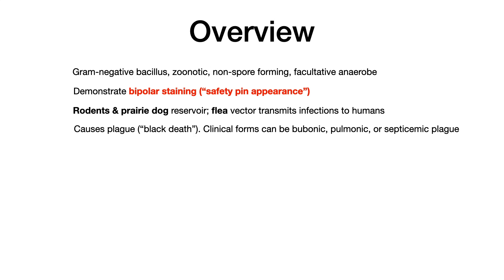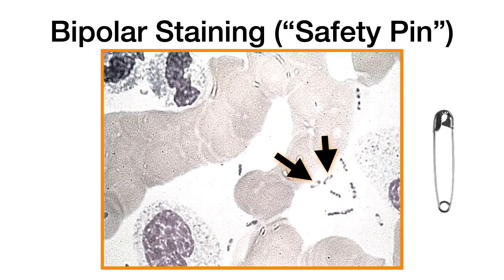Plague can be in a few different forms. The clinical forms are either bubonic plague, pulmonic plague, or septicemic plague. The most important one for you to understand for USMLE and COMLEX is bubonic plague. Here is your safety pin appearance — a pretty unique image, so commit this to memory.